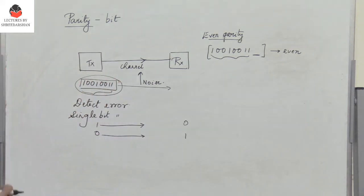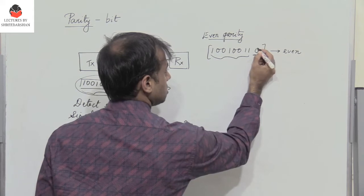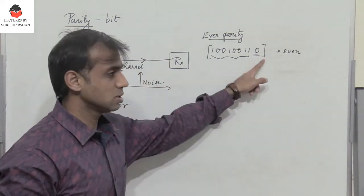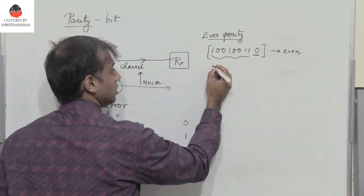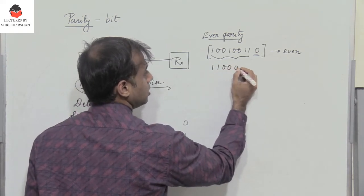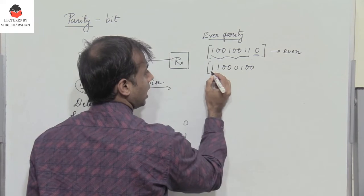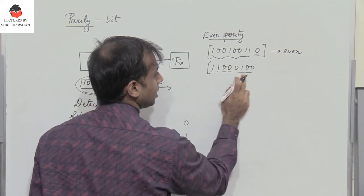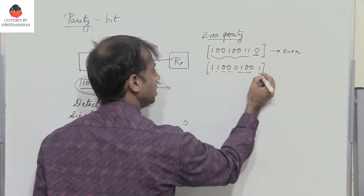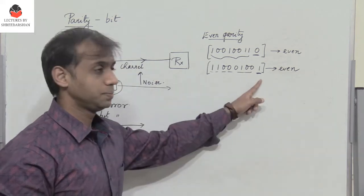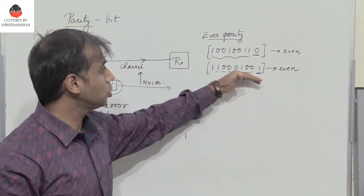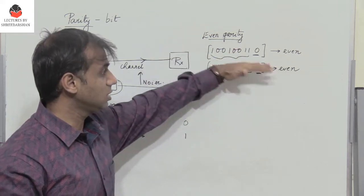Let us count the number of 1s in 10010011 — there are four 1s. Since there are an even number of 1s, the parity bit is 0. However, if the data is 11000100, the number of 1s is 3, so the parity bit will be 1, making the total number of 1s even.